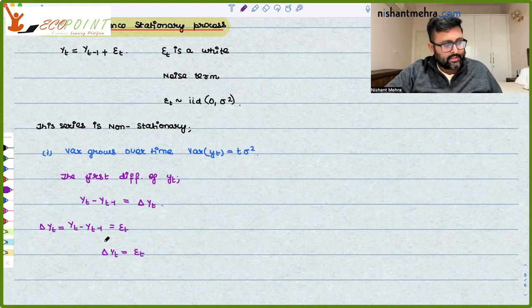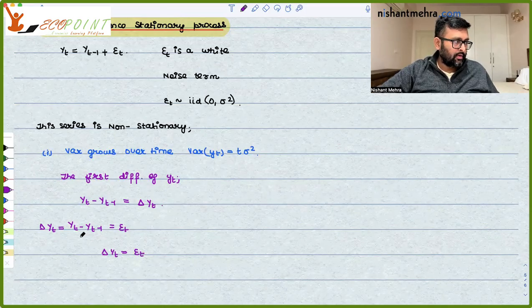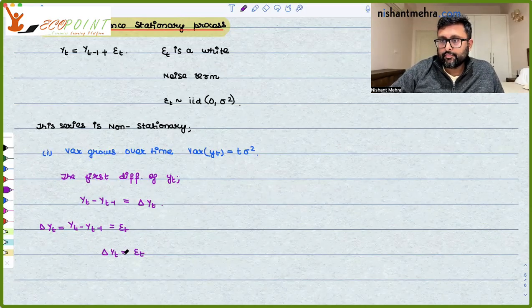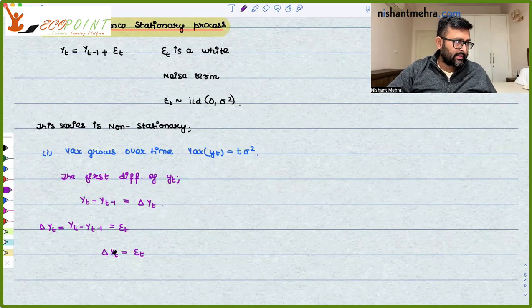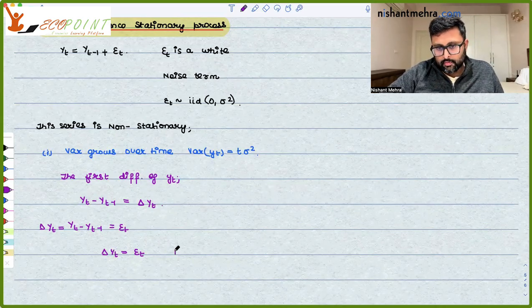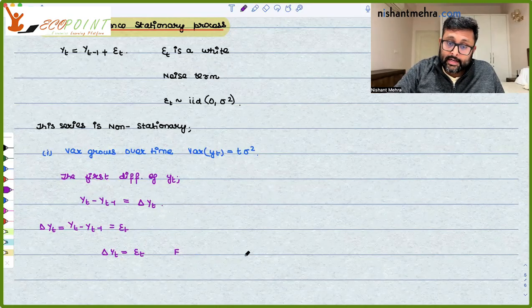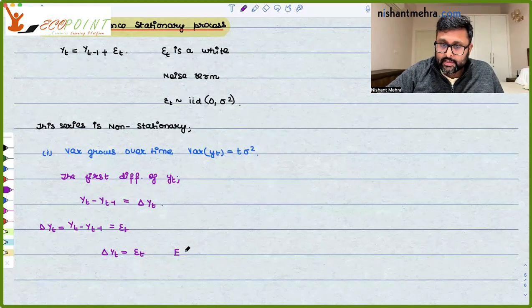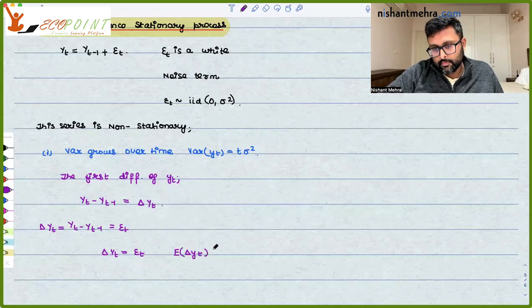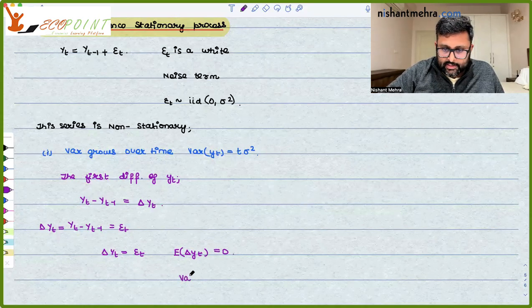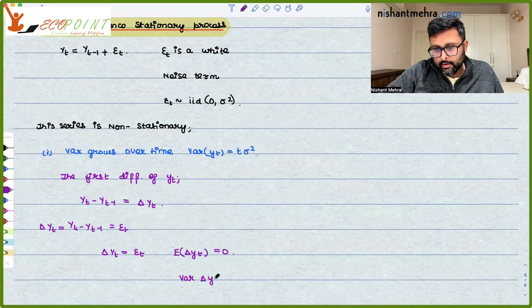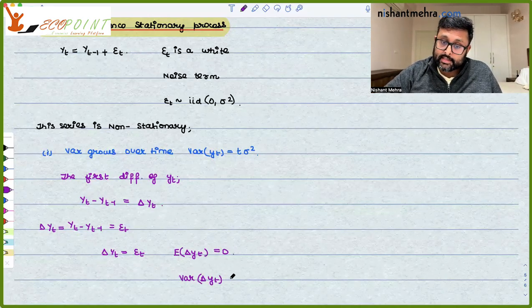Delta yt equals epsilon t. Now this is stationary. Why is this stationary? Because the expectation of this term is 0. Expectation of delta yt, which is dependent upon epsilon t, that is 0. Variance of delta yt, which is equal to the variance of epsilon t, that is sigma square.